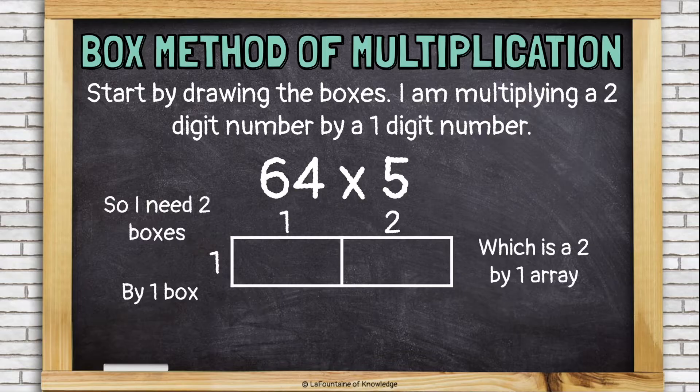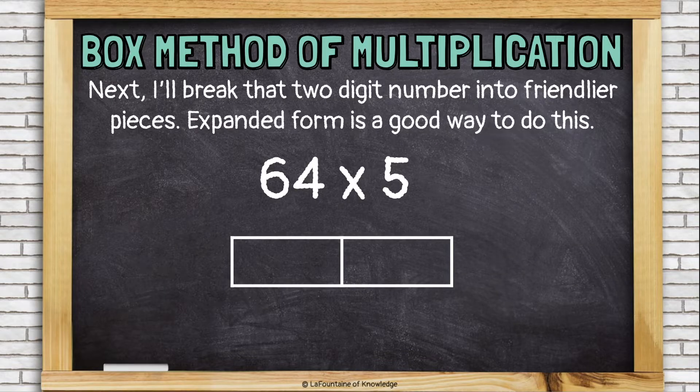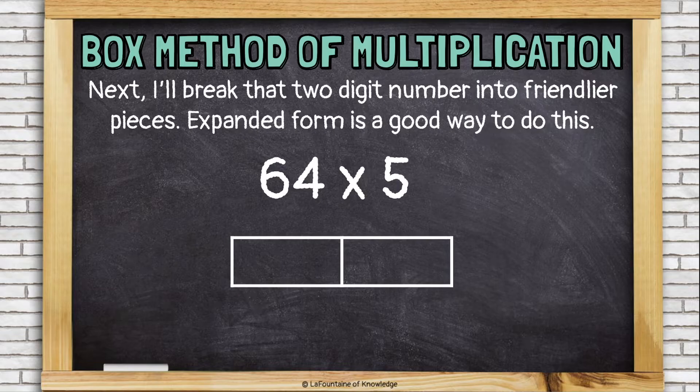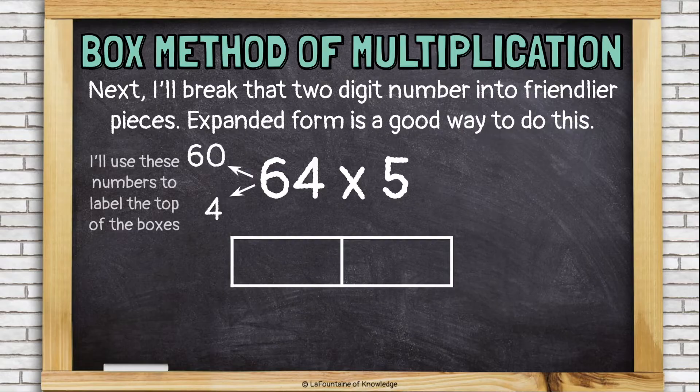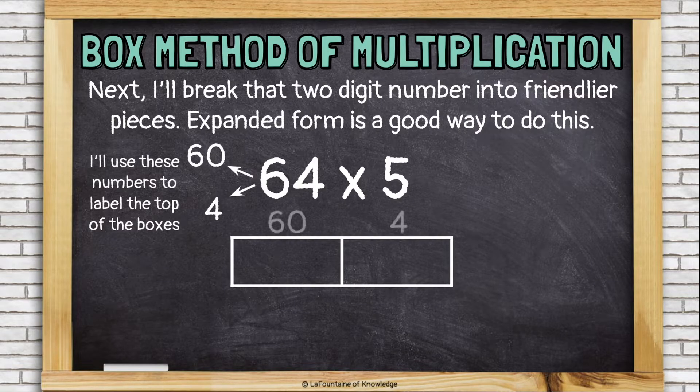This is a two-by-one array. Next, I'll break that two-digit number into friendlier pieces. Expanded form is a good way to do this, so I'm going to break 64 into 60 and 4, and I'm going to use those numbers to label the top of the boxes like this, 60 and 4.